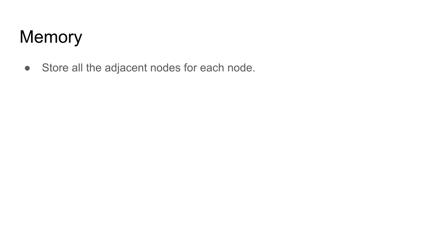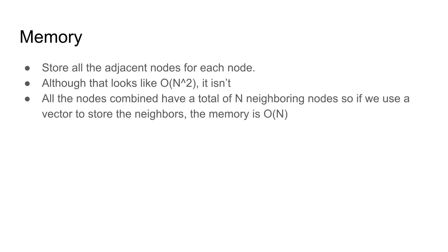Let's consider the memory. For each node, we store all the adjacent nodes. This looks like O(n²) at first, because each node could theoretically have up to n adjacent nodes. However, the total number of edges is n−1. So even if one node has n neighbors, the rest cannot. In total, all nodes together have 2n neighbors (since edges are bidirectional), which transforms to O(n) memory. So this also works.